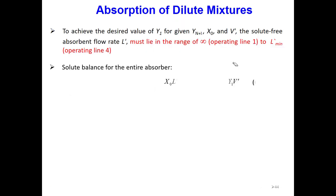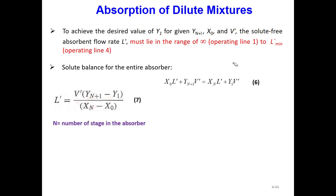We are doing all of this to find the number of stages. Our two limits are: the operating line with infinite slope and the one with the minimum slope. We always work somewhere between these two limits.